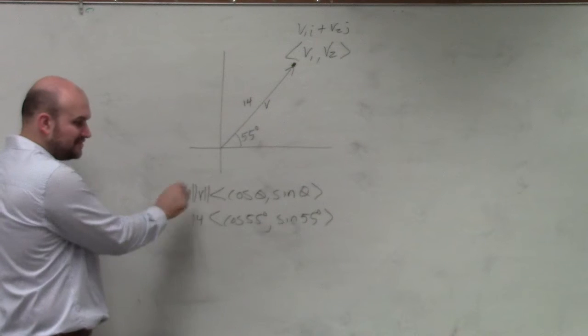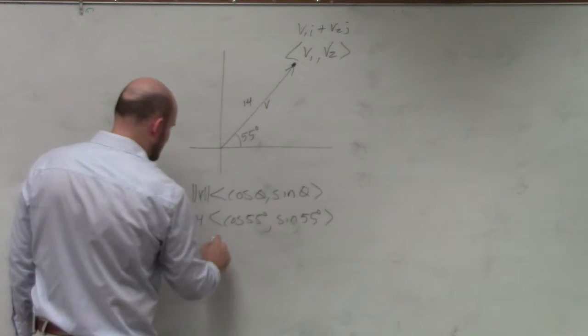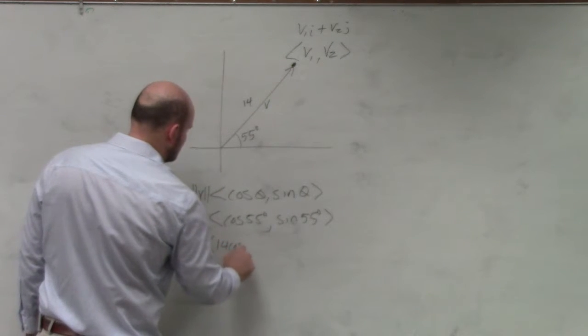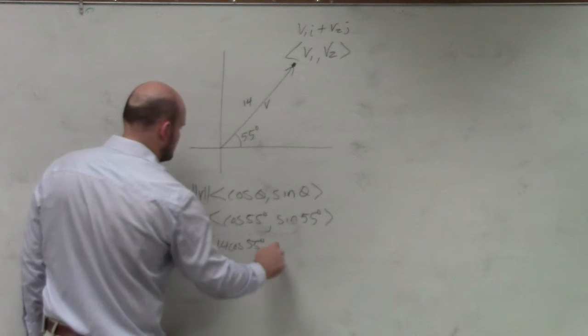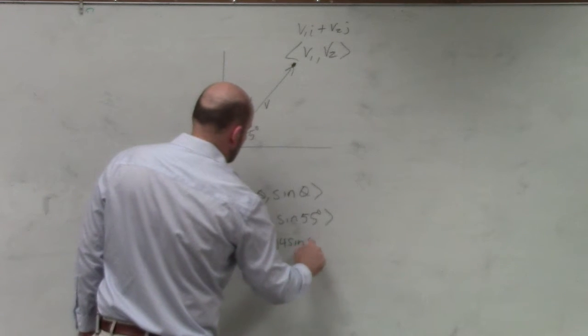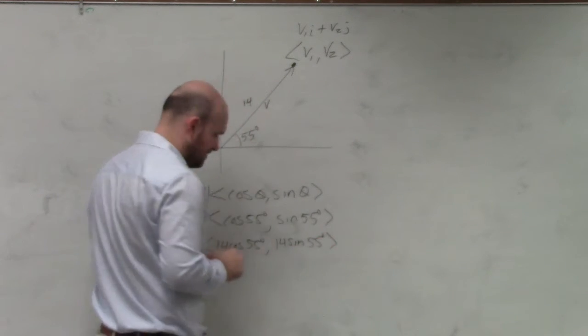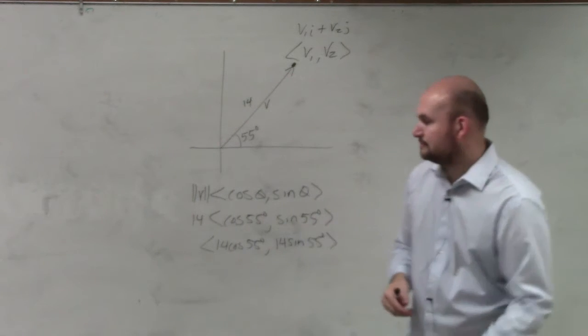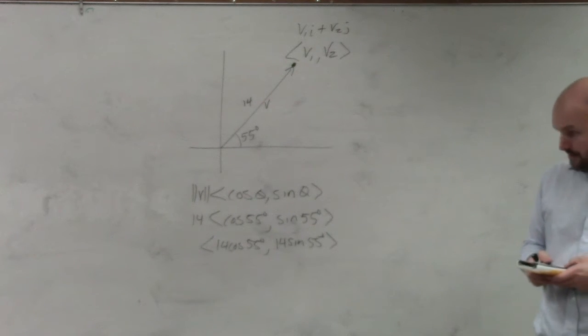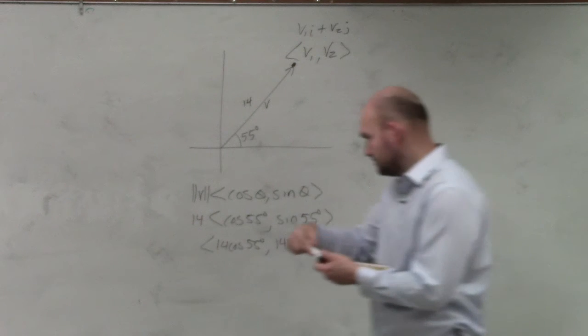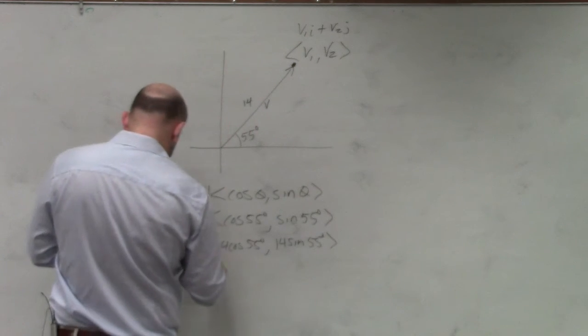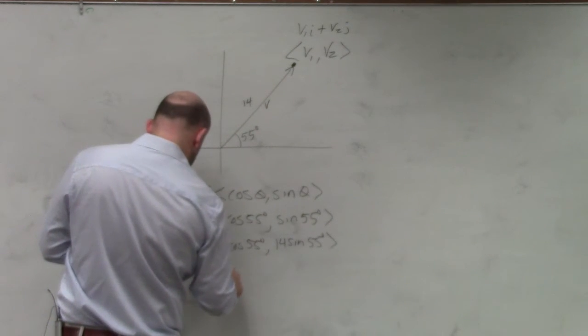Now, my magnitude is just a scalar. So multiply that in, and then just use your calculator. 14 cosine of 55 and 14 sine of 55. So Josh, what'd you get when you typed that in? Exactly.